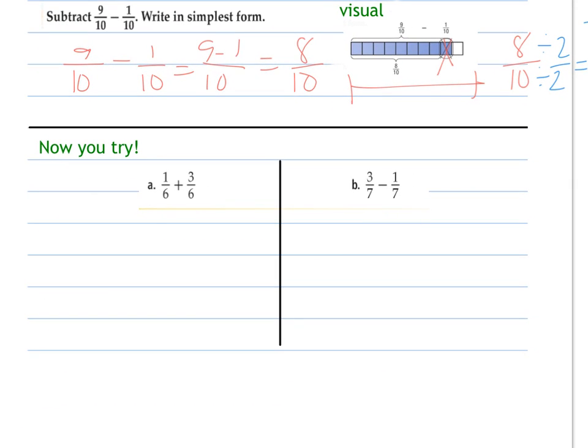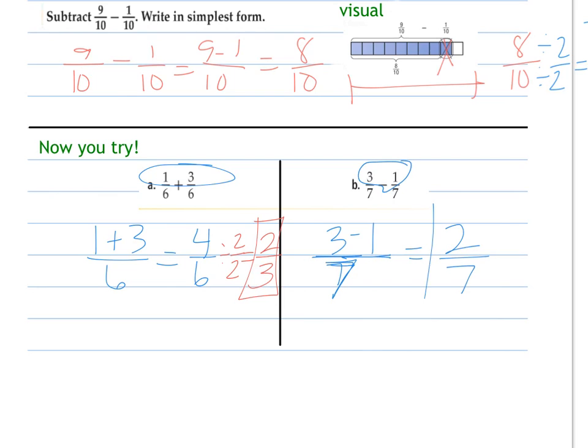So now you try, and then come back and see how you did. So one sixth plus three sixths, that's really the same as one plus three out of the sixth, which is four sixths, but in simplest form, those both share a factor of two, so it's two thirds. Three sevenths minus one, just using the numerators. Three minus one is two. Two and seven share a greatest common factor of one, so it's already simplified.